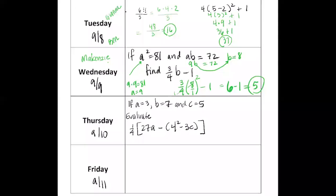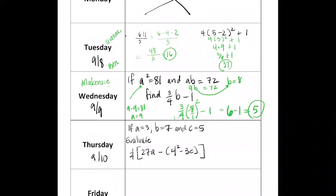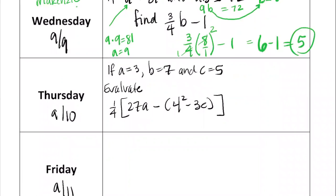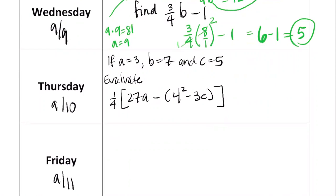Here we go, there you go my people. That is today's POD, please copy that one down. This is one of those where we're going to evaluate an expression. You need to copy the expression: one-fourth, and then you've got square brackets, 27a minus four squared minus 3c.